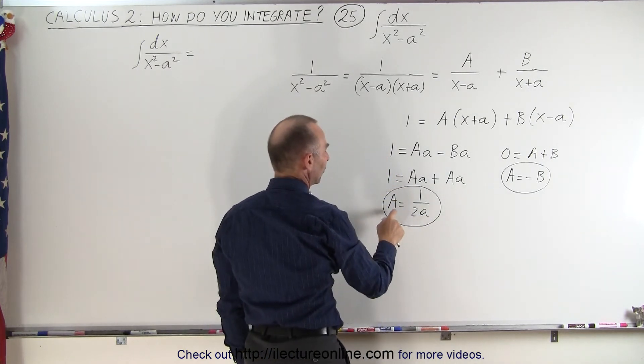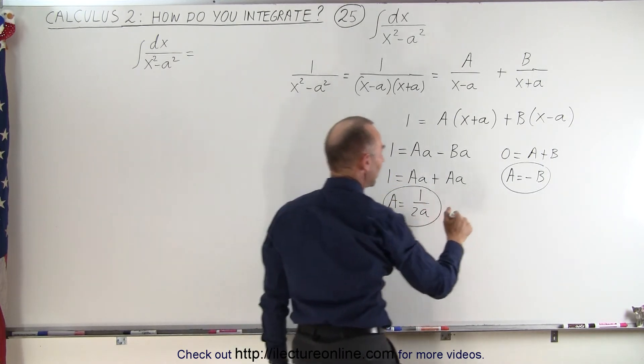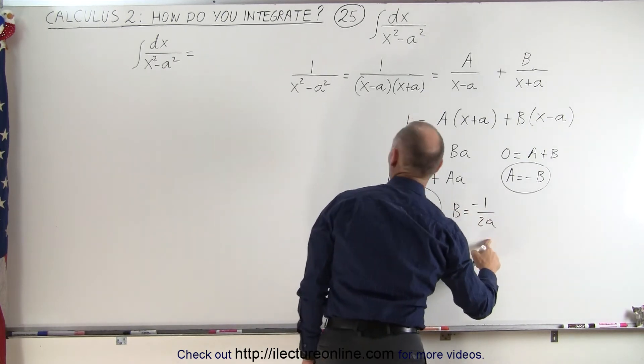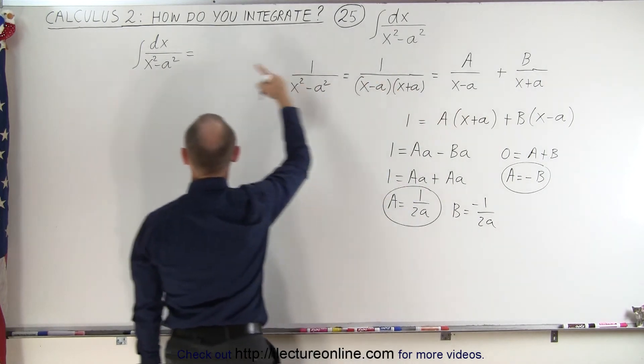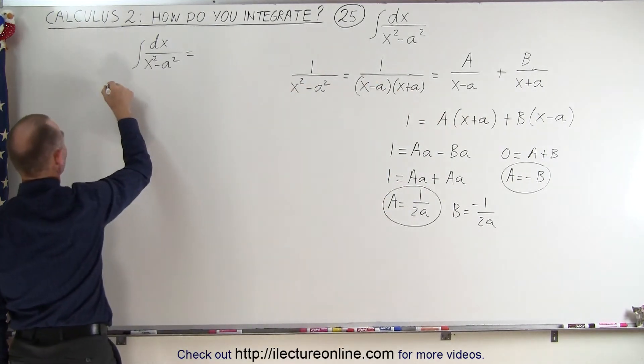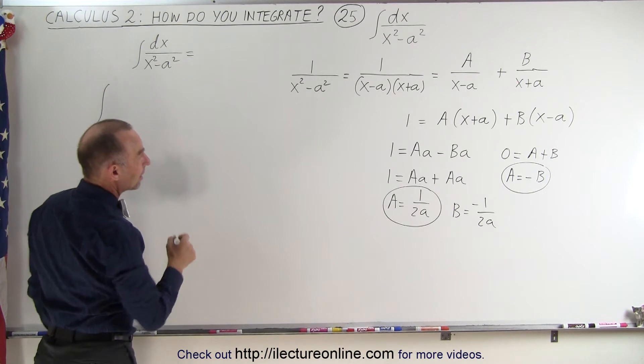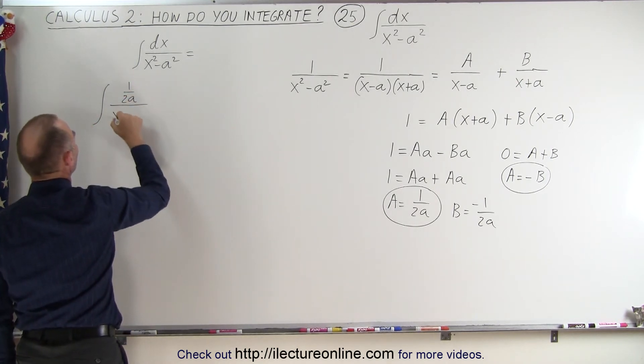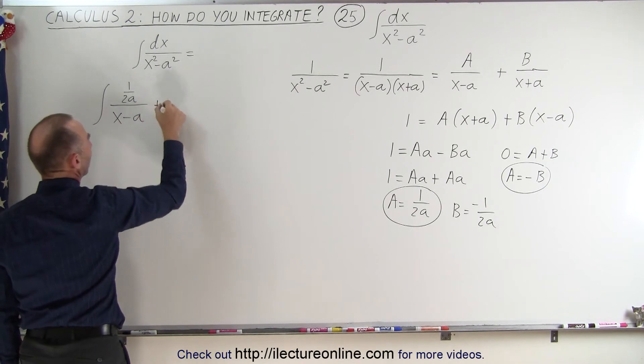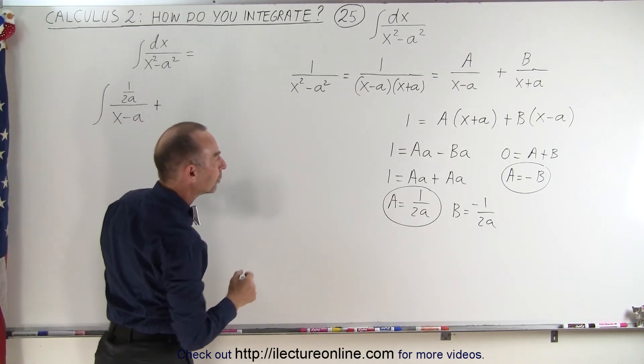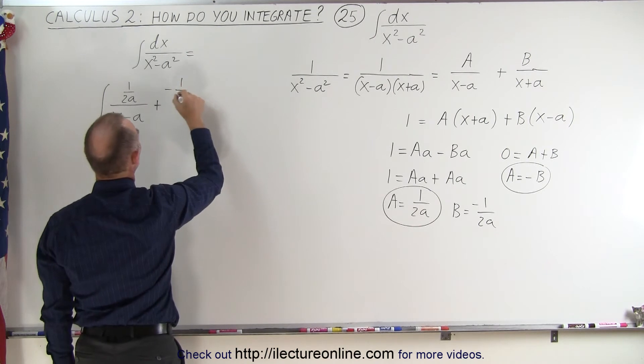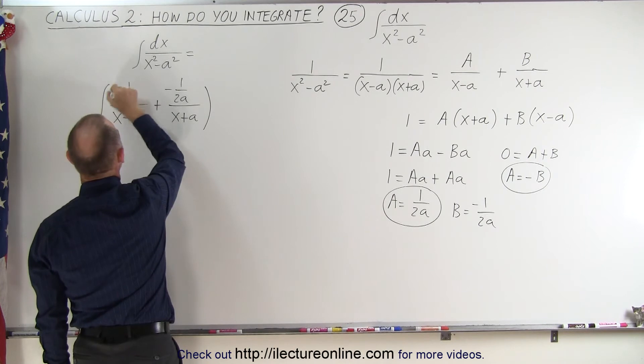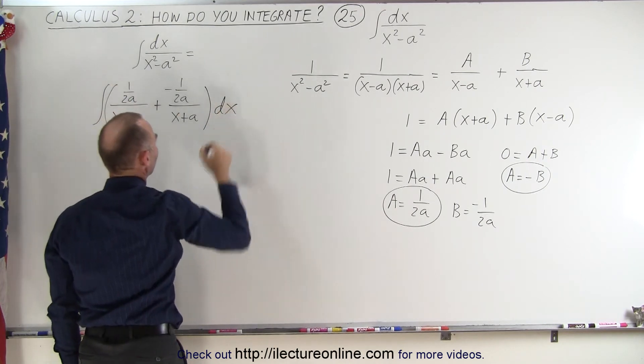And so we can now substitute, since A is equal to 1 over 2a, and B is negative of that, so we have B is equal to negative 1 over 2a. And we can now substitute that in here to rewrite that as a new integral. So we have the integral of A over x minus a, which is 1 over 2a over x minus a, plus 1 over, that would be a negative 1 over 2a times x plus a, and the whole thing times dx, because we still have to have our dx.